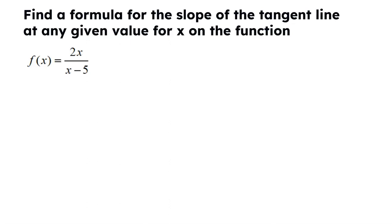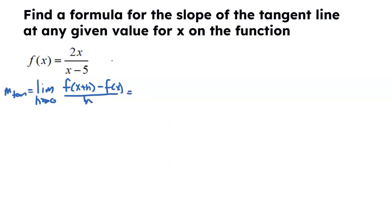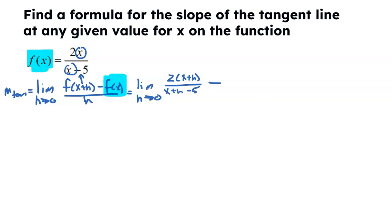One more example — another one filled with great algebra. It is a rational function, but again we want to find a formula to give the slope at any given point X. The formula to find the slope of the tangent line at any given point X is the limit as H approaches 0 of F of X plus H minus F of X, all divided by H. Plug X plus H in for both X's: I get 2 times X plus H all over X plus H minus 5, minus the original function 2X over X minus 5, all divided by H.